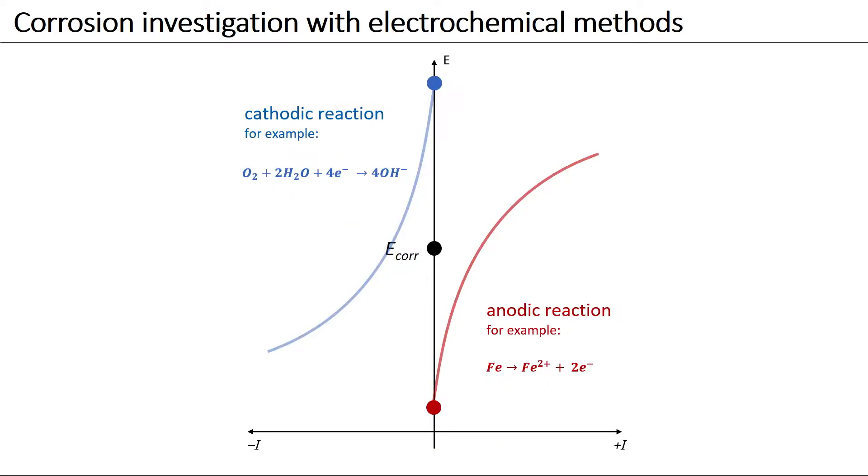Corrosion is a process that involves different electrochemical reactions. This potential current plot shows the example of iron dissolution as the anodic reaction and oxygen reduction as the cathodic reaction.